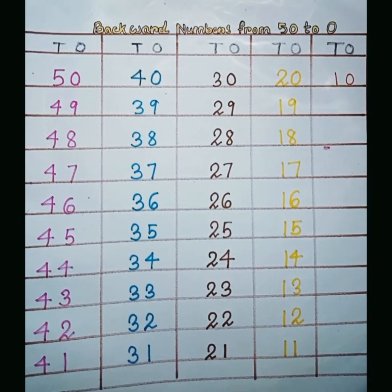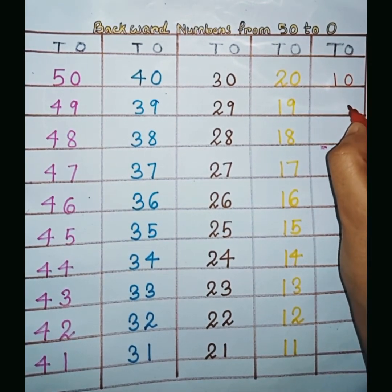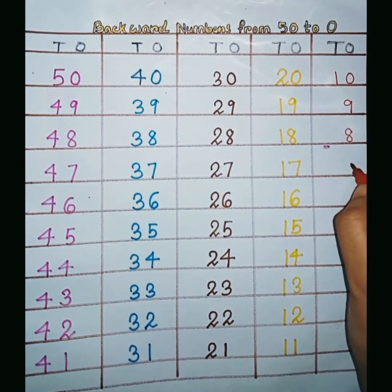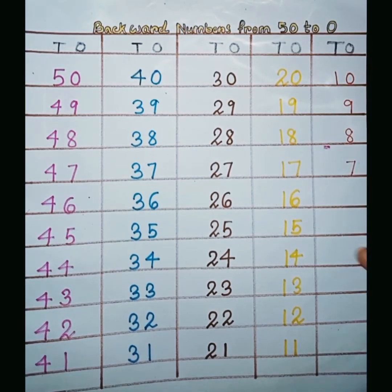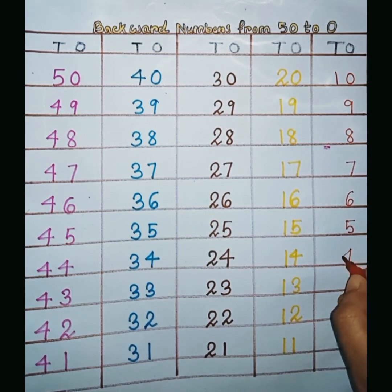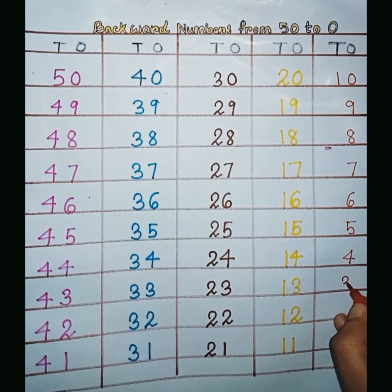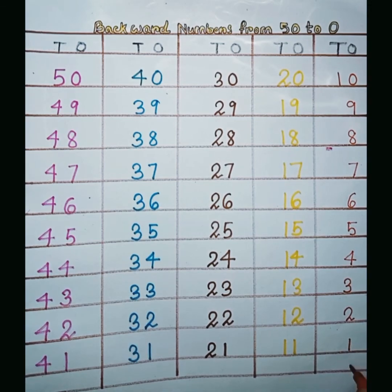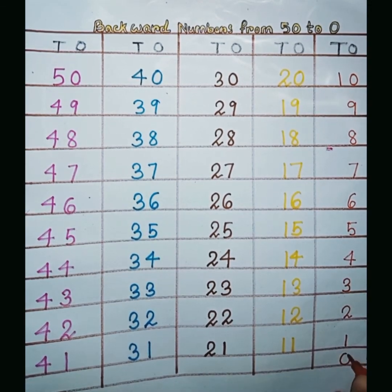And last was 10, 9, 8, 7, 6, 5, 4, 3, 2, 1, and last was zero.